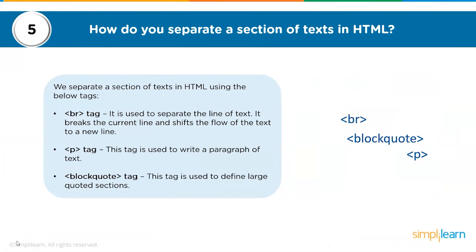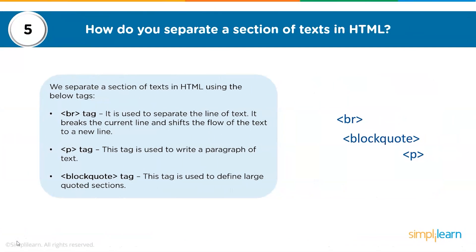The fifth question: how do you separate a section of text in HTML? We separate a section of text in HTML using the break tag, paragraph tag, and block code. The break tag is used to separate a line of text — it breaks the current line and shifts the flow to a new line. The paragraph tag is used to write a paragraph of text. The block code tag is used to define large quoted sections.